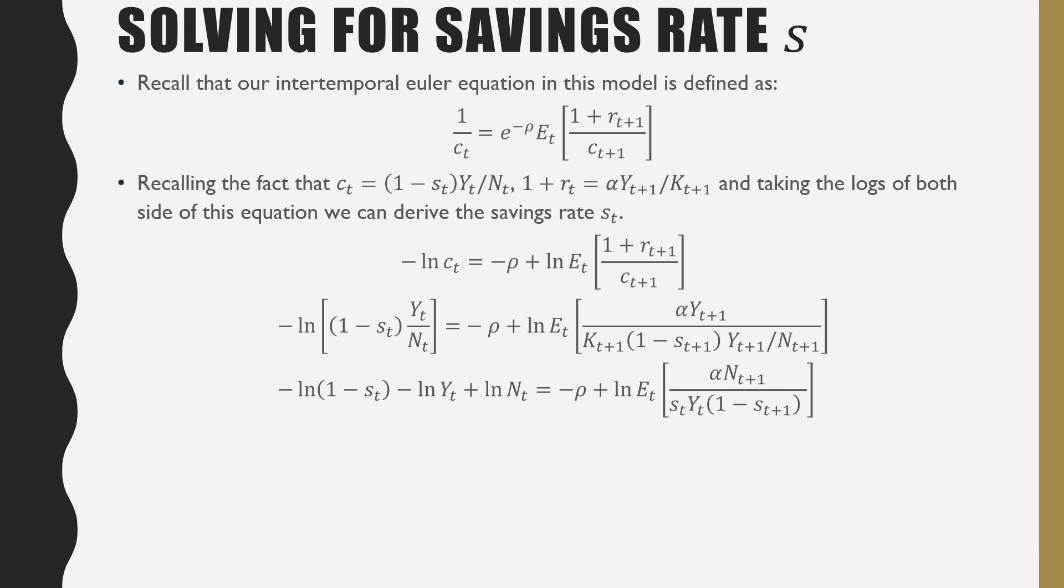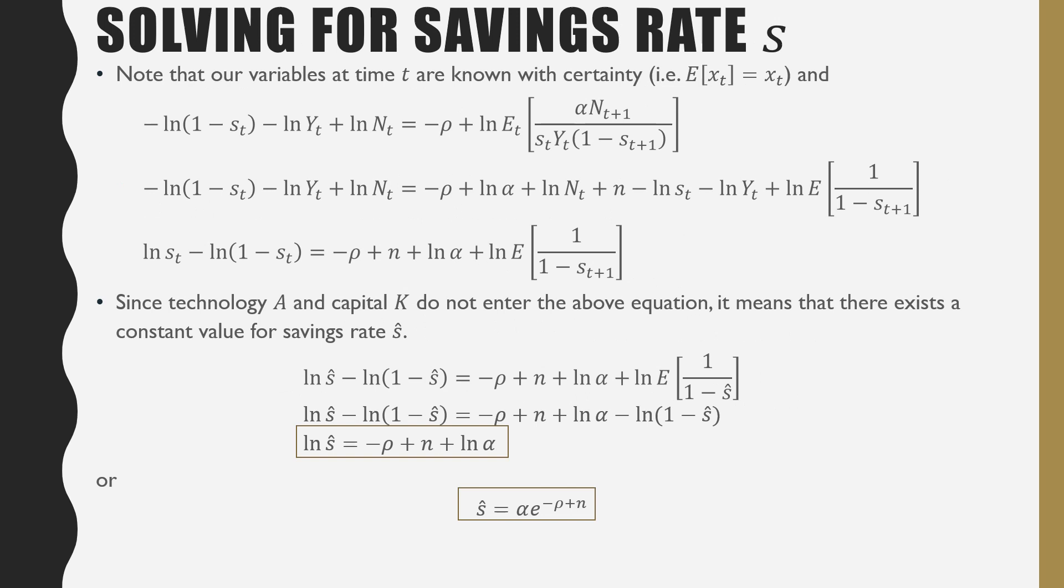We're recalling the fact that little C is equal to (1 minus S) times Y_T over N_T, which is just a rewriting of consumption per household member. And our rate of return on the market in this context is alpha equals Y_{T+1} all over K_{T+1}. And taking the logs of both sides of this equation, we can derive our saving rates S_T. So we just have some algebra here. Taking logs of both sides seem pretty straightforward. Notice that when we take the natural log of this expectation, we just leave everything on the inside unchanged. That's the main point.